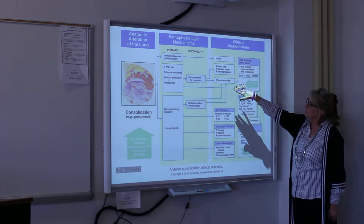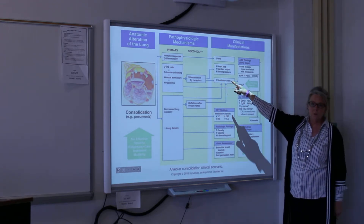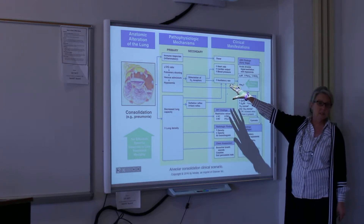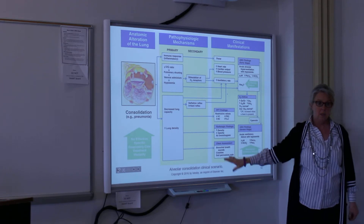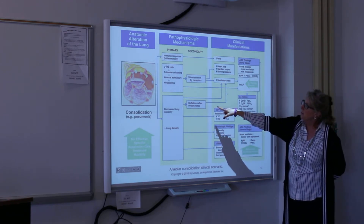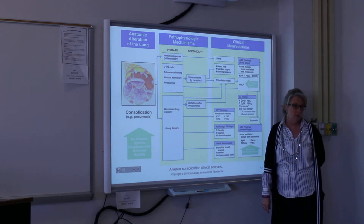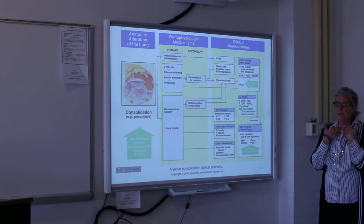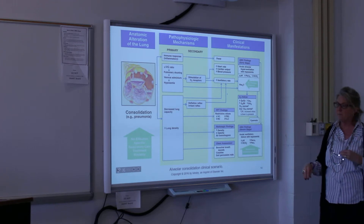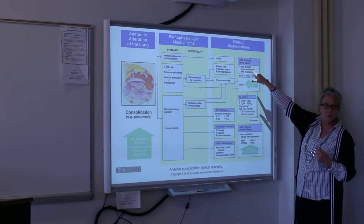Secondary pathophysiologic mechanisms: the hypoxia stimulates the peripheral receptors when PaO2 gets down to 60 mmHg — and we're not just talking about COPD patients, though a COPD patient can have pneumonia too. The deflation reflex and the irritant reflex are stimulated. We may get some sneezing and possibly coughing, but coughing typically doesn't happen until the pneumonia is resolving.